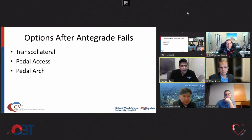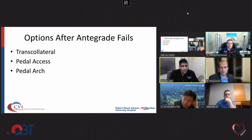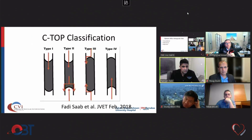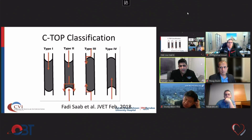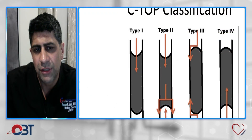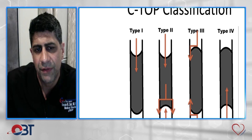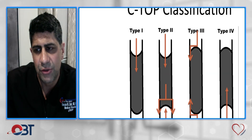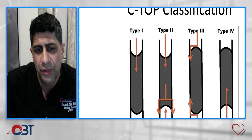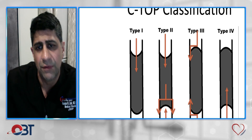Our options after antegrade fails include transcollateral pedal access, and we can also use the pedal arch as a collateral to revascularize tibial occlusions. This CTO classification helps us identify CTOs into four types based on their cap morphology — whether it's concave or convex — and helps us identify which lesions are most likely to fail via an antegrade approach so we can quickly move to a retrograde pedal access.